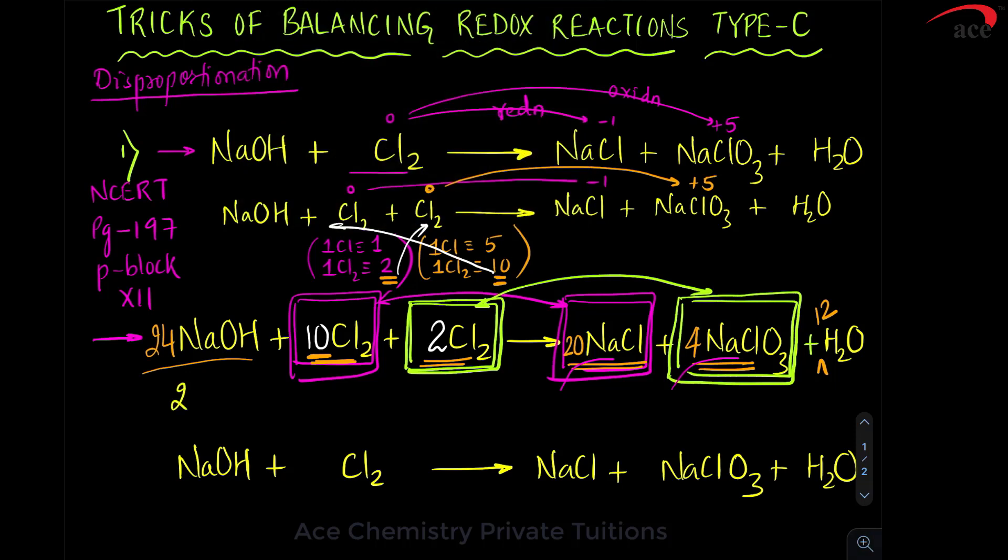So, what we do next is we rewrite the reaction. So, 24 NaOH plus 12 Cl2 is going to give you 20 NaCl plus 4 NaClO3 plus 12 H2O. Now, we realize there is a common term 4 which can be removed so that the reaction can be simplified. So, if you divide the entire by 4 as a number you will get what?